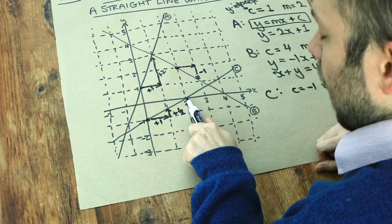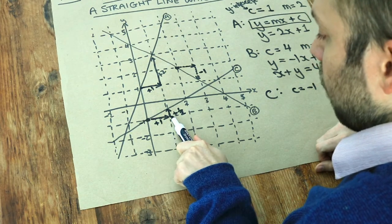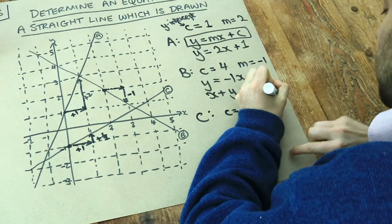And that means for each one across we go, we must go just half a square up. So the gradient is half.